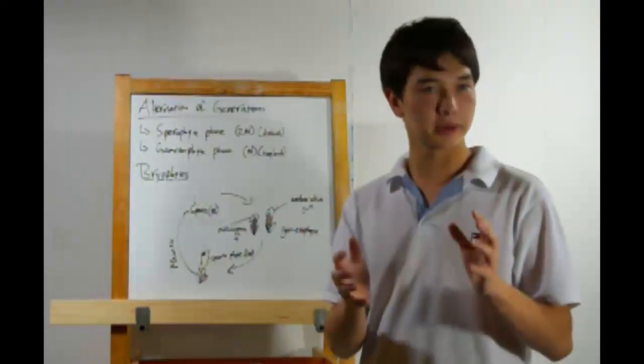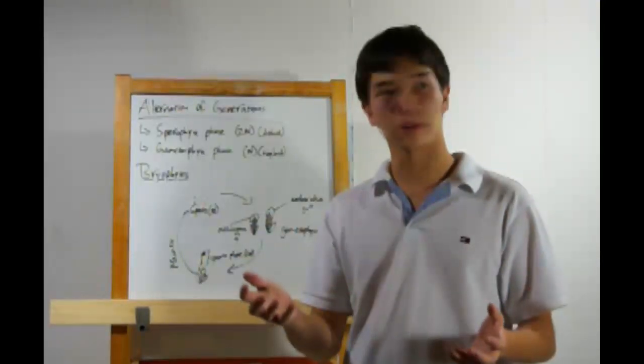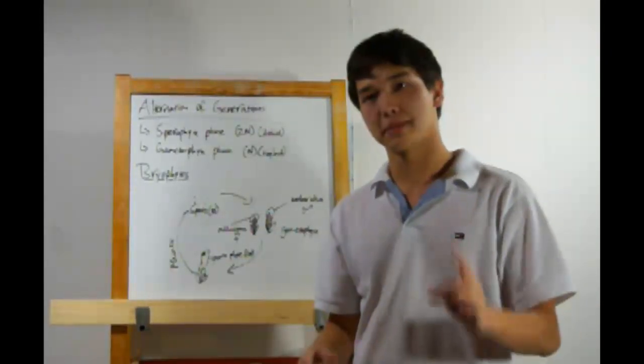Plants go through this pretty cool thing where they alternate between two major forms, a haploid form and a diploid form. Let me explain.